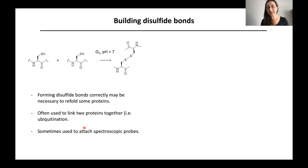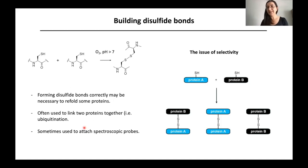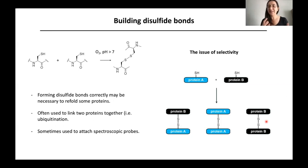When using disulfides to connect two proteins, you have to be aware of the selectivity issue. If you have protein A and protein B and want to build a disulfide between them, leaving them together will give you what you want — A attached to B — but also A-A and B-B homodimers. So you lose a lot of protein to these non-productive homodimers instead of the heterodimer you're interested in. There are ways to bias the chemistry to make more of the desired heterodimer.